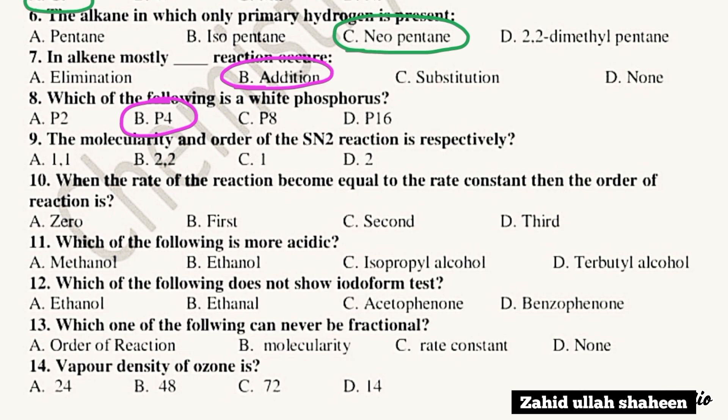Question 7: The molecularity and order of the SN2 reaction. The molecularity of the SN2 reaction is 2, and the order is also 2. The answer is option B.